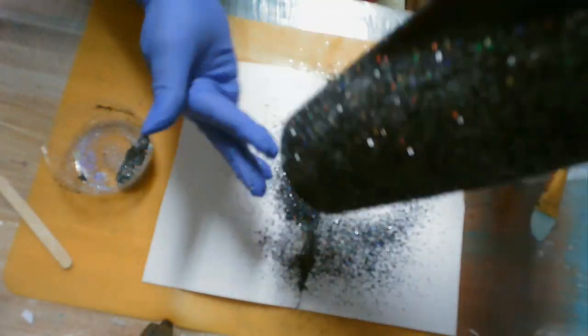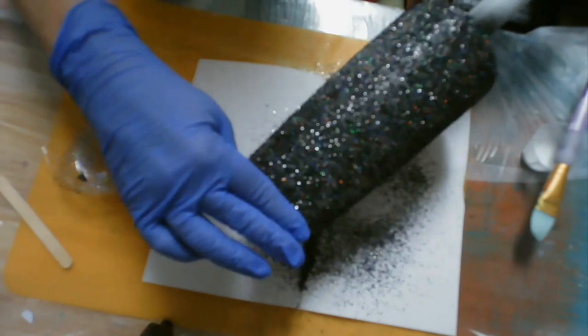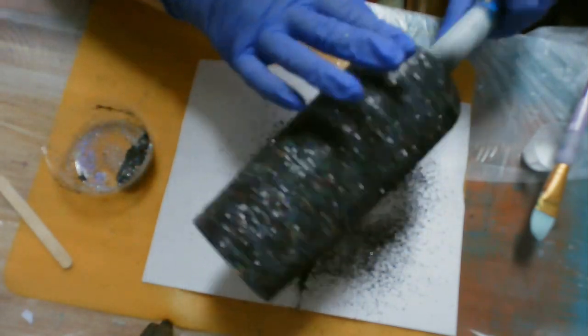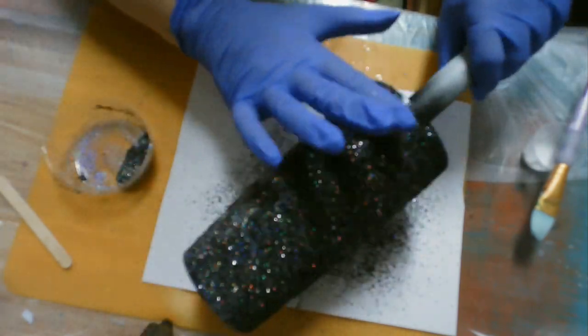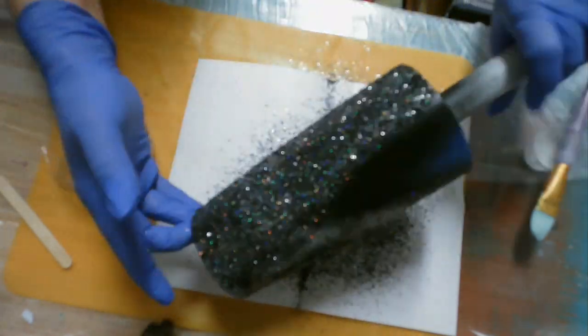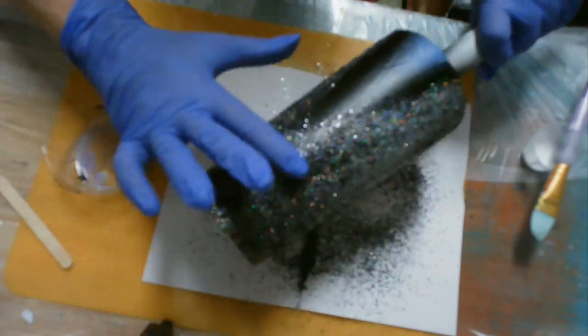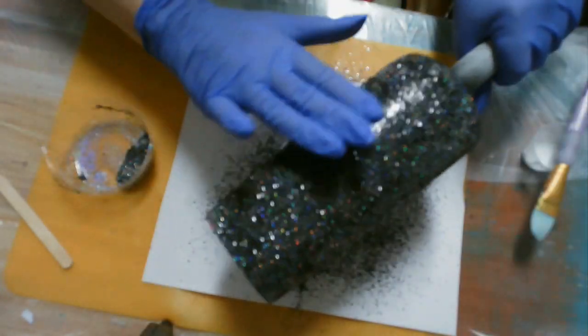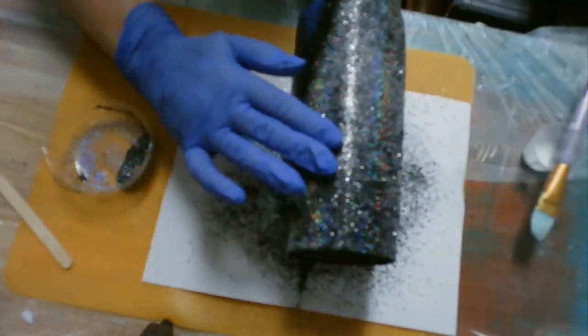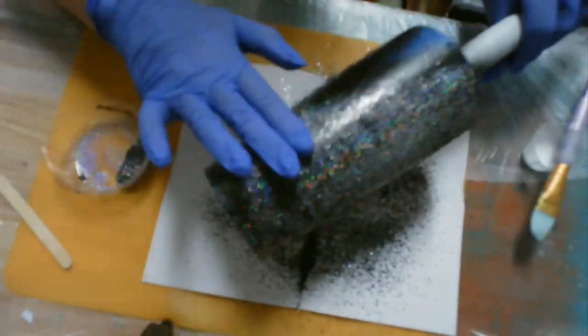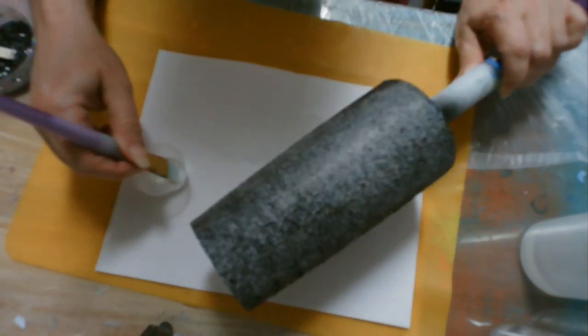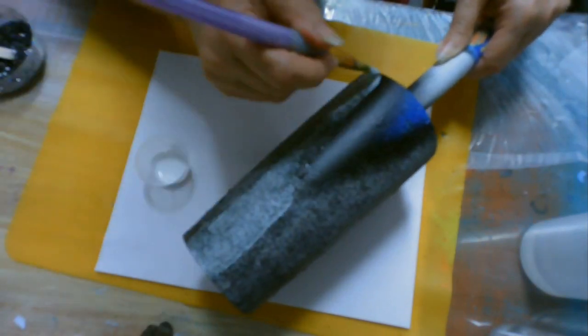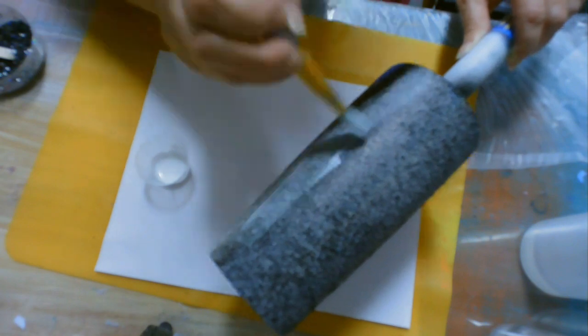And then I'm going to spray it with some clear matte sealer and then come back and do another layer of the glitter. And here I'm just pressing it down into the Tack-It to make sure that this first layer gets really down onto the cup. And then the second layer will fill in any gaps that might have been left by the pressing it down.